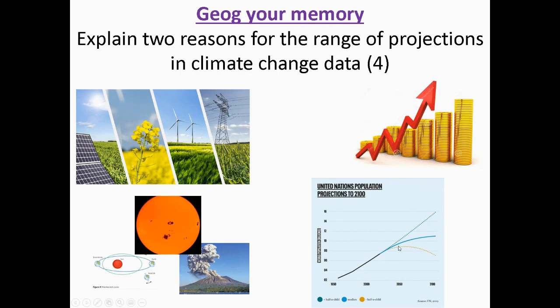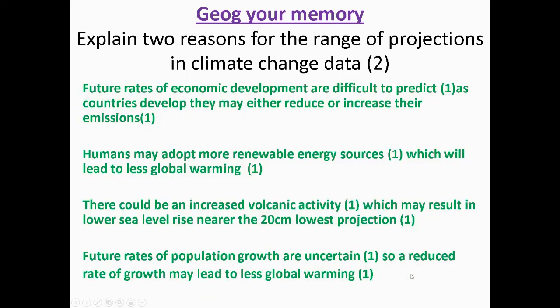So this is the projection going forward for population change across the world. So some people think that it's going to increase rapidly. Some people think that it's going to start to slow down. And some people think that global population is actually going to decrease. So because it's such a complex picture, there's lots of factors that play a role in this.